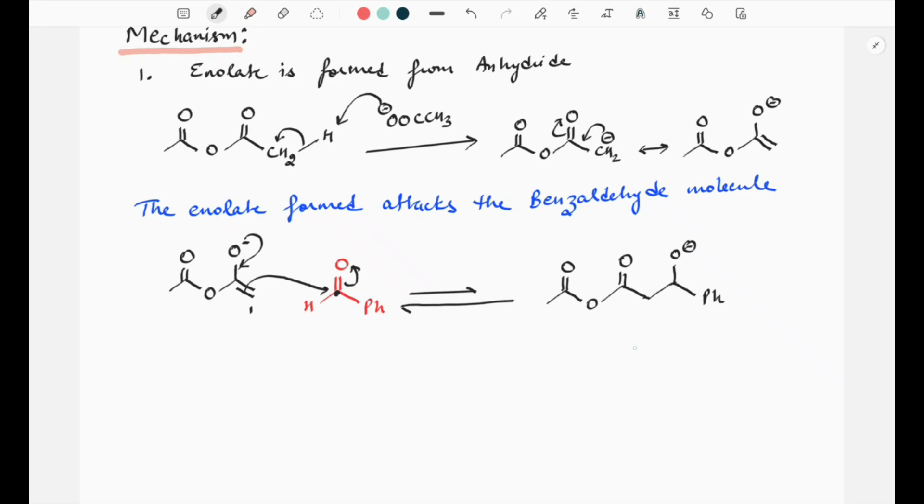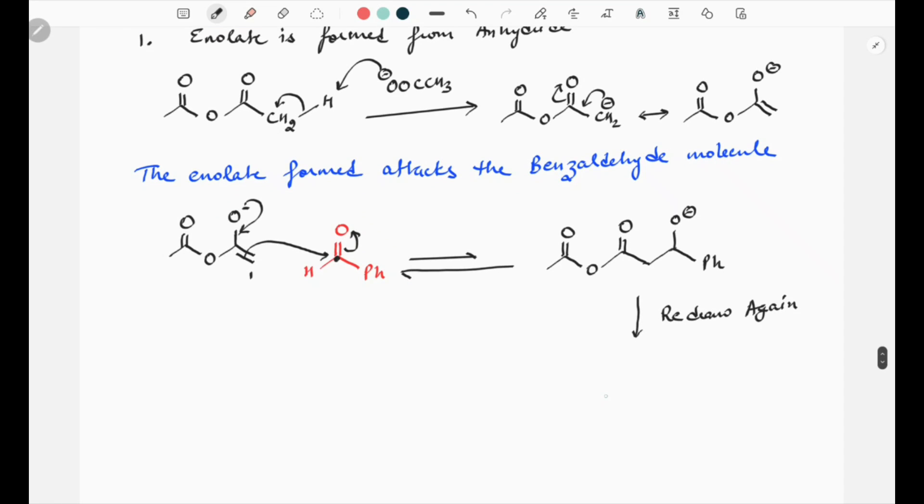Now we have to redraw this molecule again to explain the further reaction. Mark this carbon or atom numbers 1, 2, 3, 4, 5, 6. Starting from number one, we have C double bond O at number two, then number 3 oxygen, number 4 C double bond O, number 5 is CH2, and number 6 is phenyl. This is oxygen, now this oxygen has a negative charge.